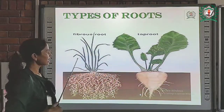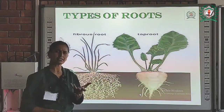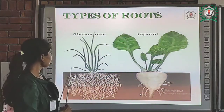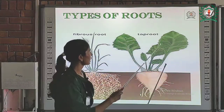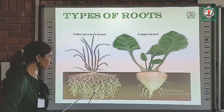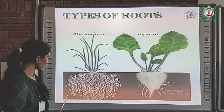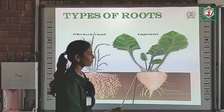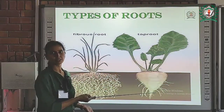As you can see here, we have discussed about roots before. There are two types of roots. These roots are known as tap roots, and these roots are called fibrous roots because these roots have fibers, while tap roots do not have fibers. Basically, fibrous roots are found in vegetables.